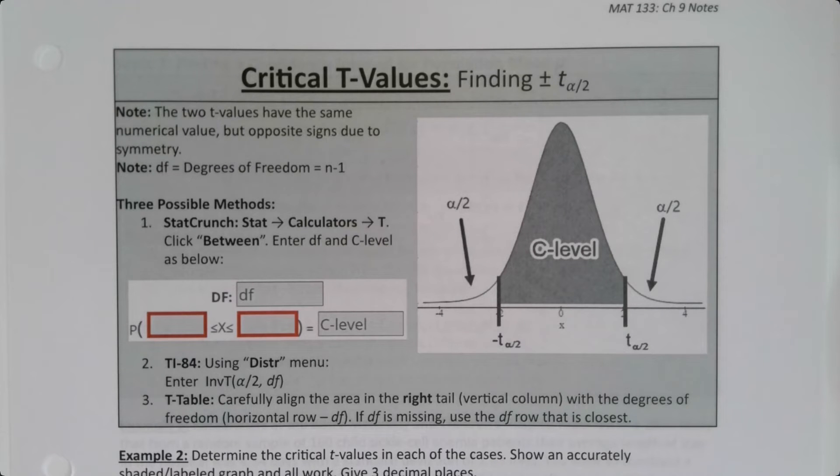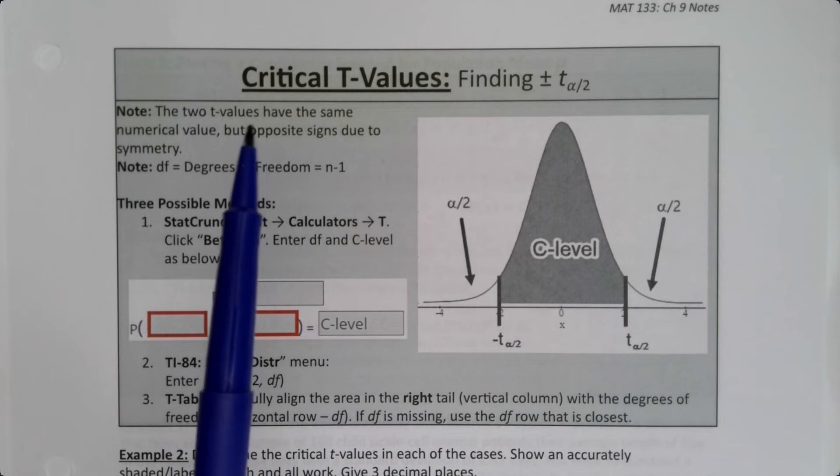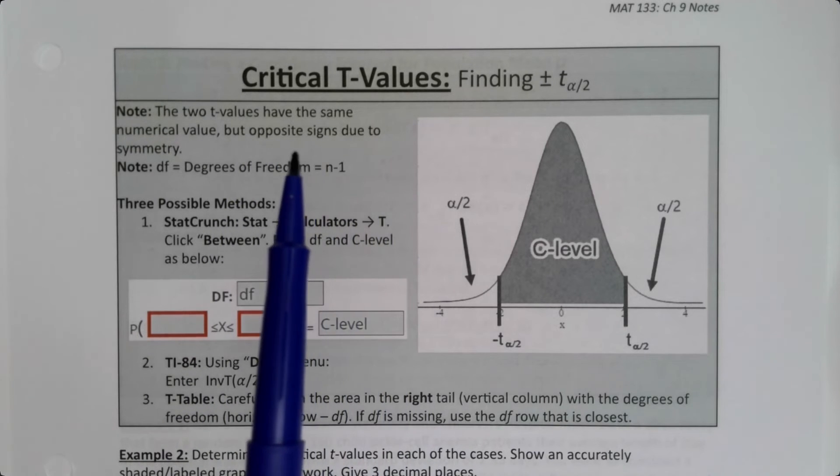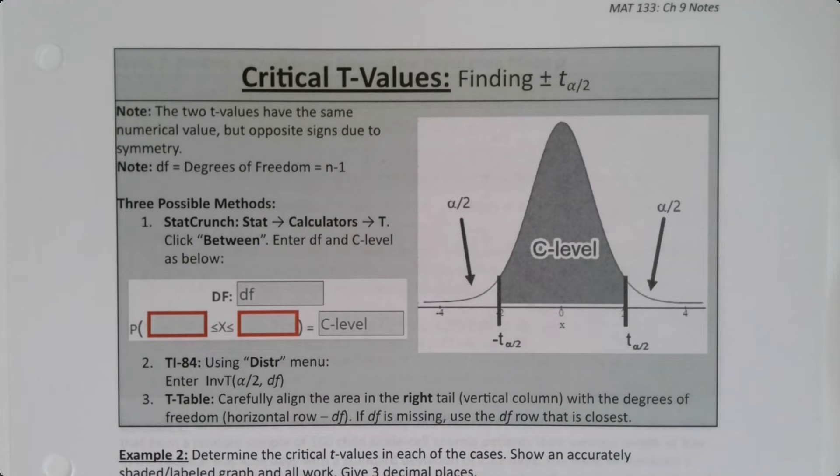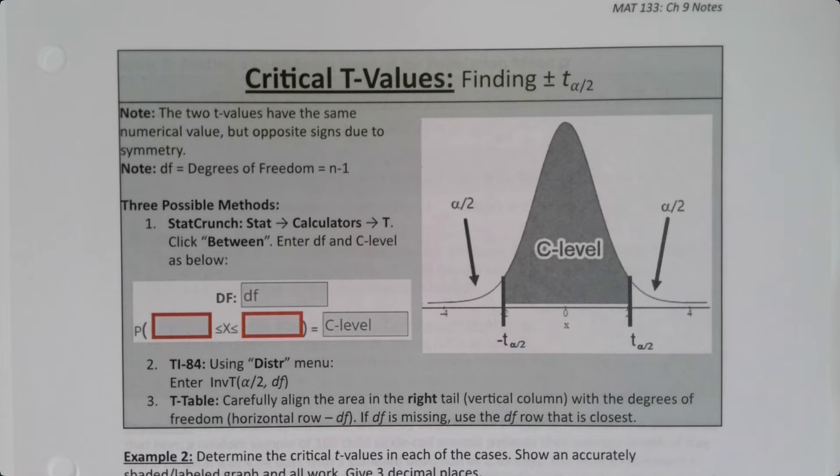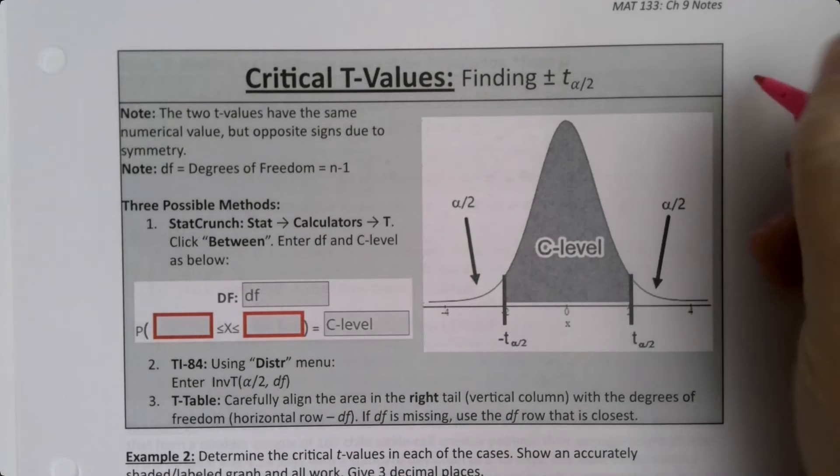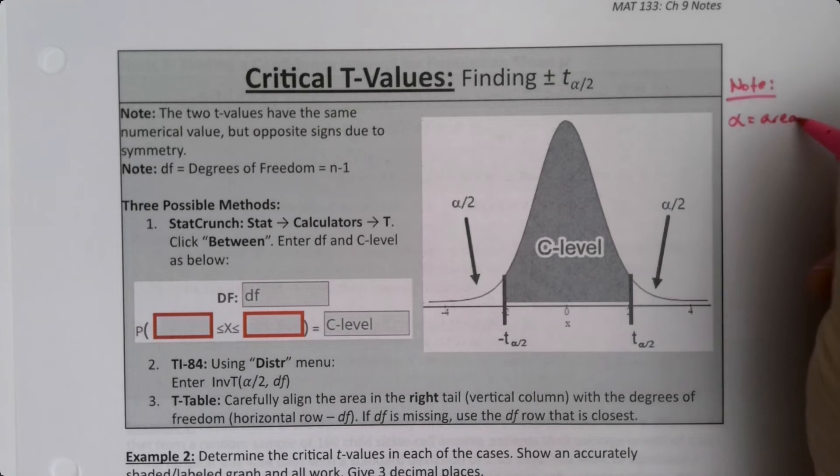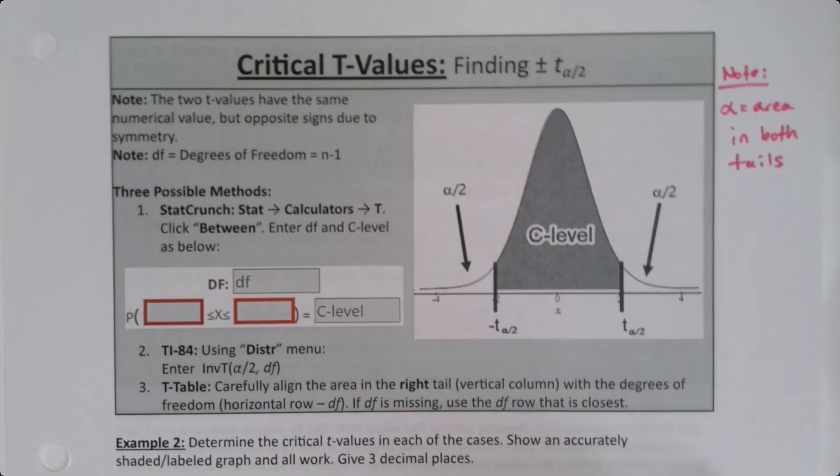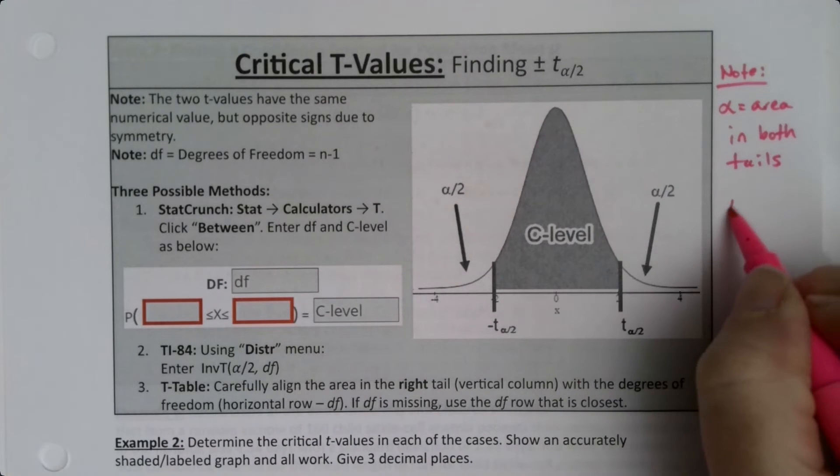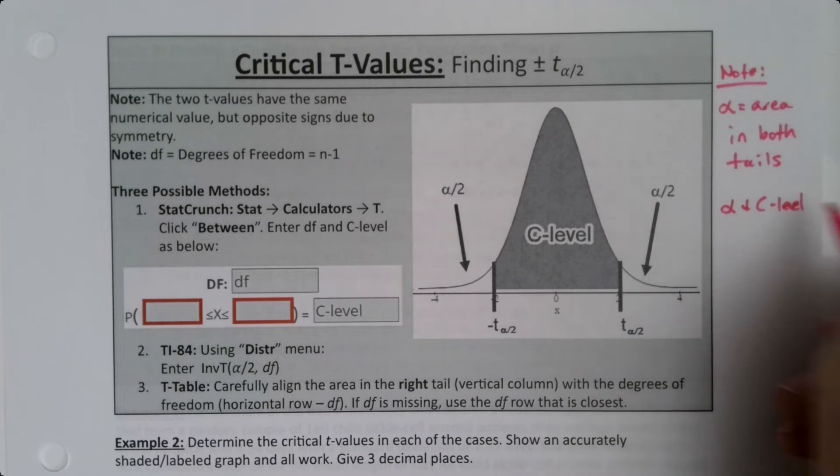Of course, now that we know what the t-curves are, we're going to have to be able to find the critical t-values so that we can do the confidence interval piece that we know is coming in another page. So just a reminder before we go any further, alpha is the complement of your confidence level. So the center is your confidence level. Alpha is the area in both tails. Alpha and the C level are complements of each other.